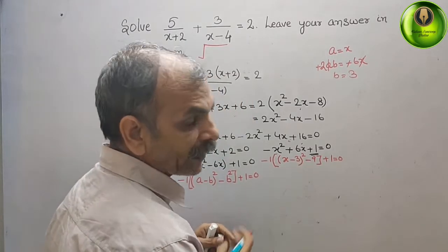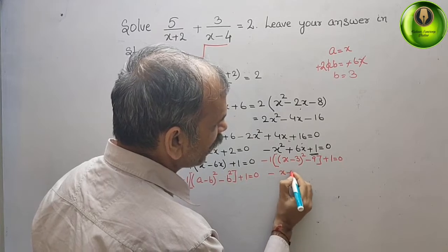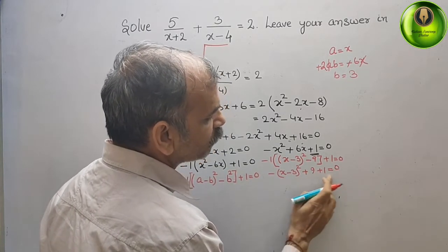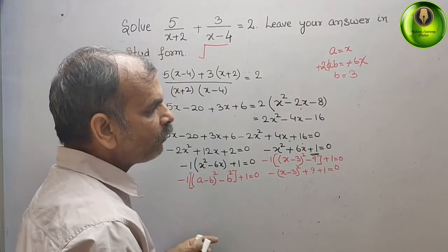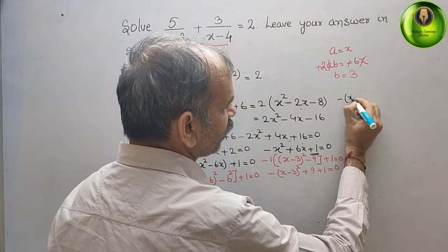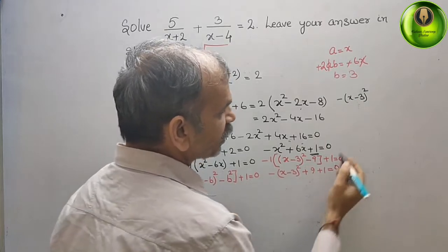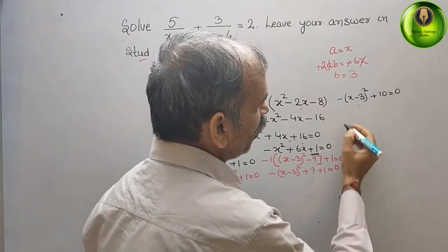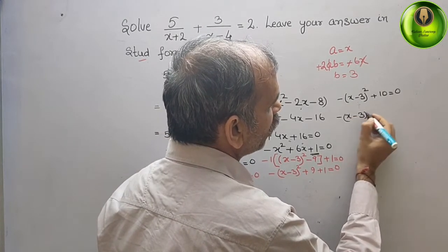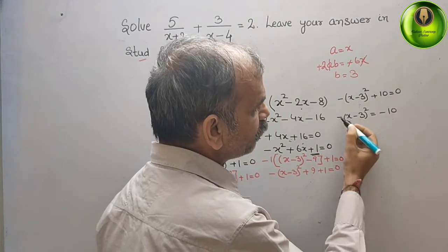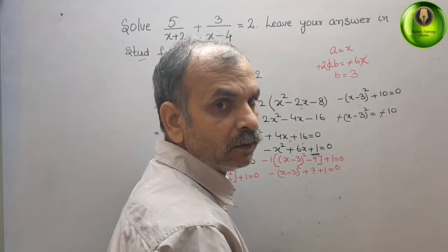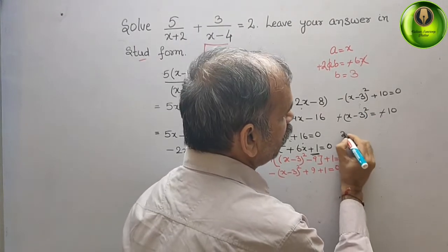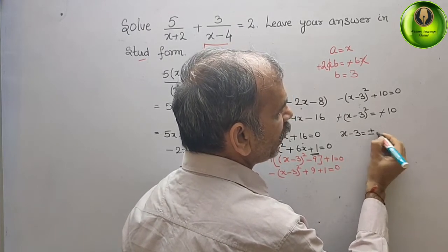Opening the bracket: -(x - 3)² + 9 + 1 = 0, which gives -(x - 3)² + 10 = 0. Bringing 10 to the right side: -(x - 3)² = -10. The negatives cancel, so (x - 3)² = 10. Therefore x - 3 = ±√10.